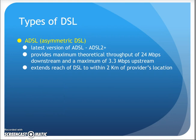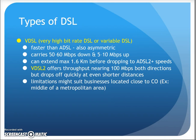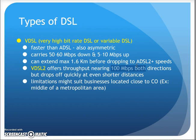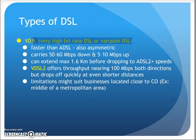The latest version of ADSL is ADSL2+, which provides a maximum throughput of 24 Mbps downstream and 3 Mbps upstream, but is limited to about 2 kilometers from the provider — which was usually the hang-up for DSL availability. VDSL is faster than ADSL, also asymmetric, carrying about 50 to 60 Mbps downstream and 5 to 10 Mbps upstream, with speeds dropping off beyond 1.6 kilometers. VDSL2 offers throughput nearing 100 Mbps in both directions, but again drops off quickly with distance. This made VDSL suitable for businesses located close to the CO in a metropolitan area, while most homes used ADSL.